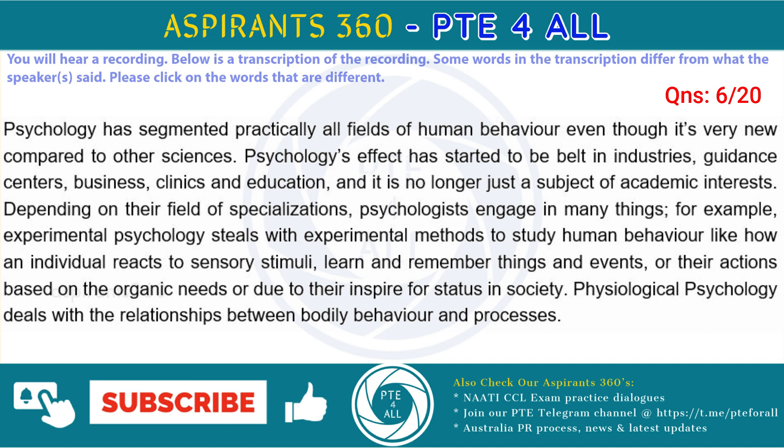Depending on their field of specializations, psychologists engage in many things. For example, experimental psychology deals with experimental methods to study human behavior like how an individual reacts to sensory stimuli, learn and remember things and events, or their actions based on the organic needs or due to their desire for status in society. Physiological psychology deals with the relationships between bodily behavior and processes.